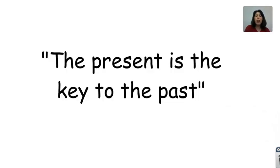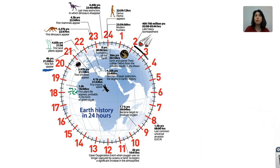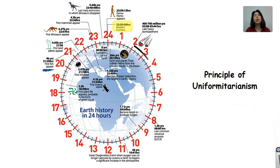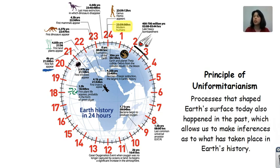So the present is the key to the past. What exactly does this phrase mean? Well, if we were to look at the time that the Earth has been in existence as a 24-hour clock, humans have only been around for a short period of time — in fact, we only showed up during the last couple of seconds of that 24-hour day. So we need to rely on what we see today, and this is outlined under the principle of uniformitarianism. What the principle of uniformitarianism states is that processes that shape the Earth's surface today also happened in the past, which allows us to make inferences as to what has taken place in Earth's history.